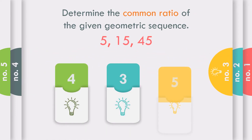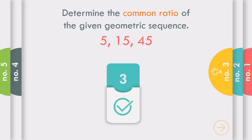How about number 3? What is the common ratio of the geometric sequence 5, 15, and 45? The answer is positive 3, because 15 divided by 5 is 3, or 45 divided by 15 is also equal to 3.